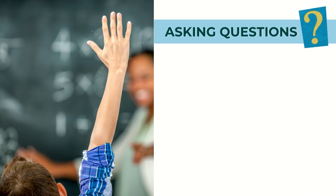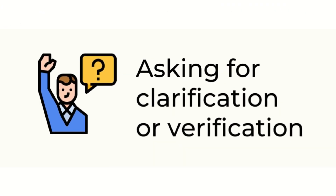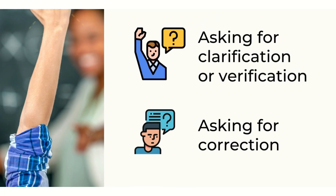First is asking questions. Under this set, we have two strategies: asking questions for clarification or verification, and asking for correction. Asking questions for clarification or verification entails asking the speaker to repeat, paraphrase, explain, slow down, or give examples, asking if a specific utterance is correct or if a rule fits a particular case, and paraphrasing or repeating to get feedback on whether something is correct. The second strategy, asking for correction, involves asking someone for correction in a conversation — this most often occurs in conversation but may also be applied to writing.